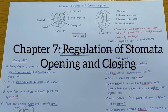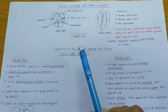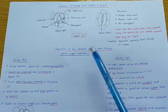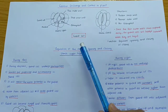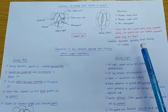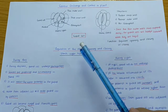Now we look at the last subtopic in Chapter 7, which is gas exchange and control in plants. For this subtopic, what you have to know first is the structure of the guard cell, because the function of the guard cell is to regulate the opening and closing of the stoma or stomata.